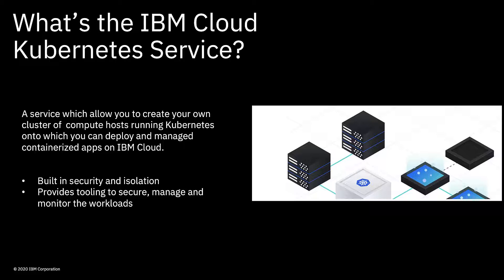Now of course, if you wanted to, you could build your own Kubernetes service — either on premises, using bare metal servers, or using virtual machines on IBM Cloud — by taking the latest Kubernetes build and deploying it. But there's a lot of work involved in doing that. So essentially the IBM Kubernetes Service takes away that bother and instead provides a service that gives you intelligent scheduling, self-healing, horizontal scaling, load balancing, built-in security and isolation, and advanced tools to help you manage, secure and monitor workloads, making them highly scalable and highly available without having to build all that yourself.